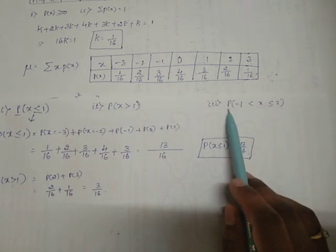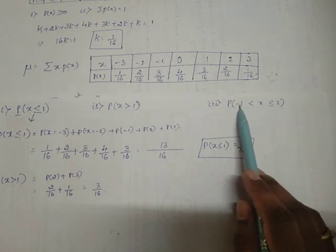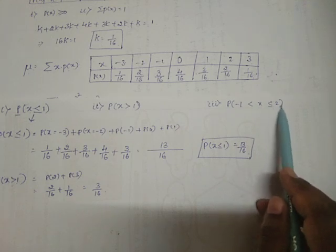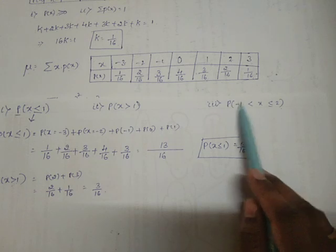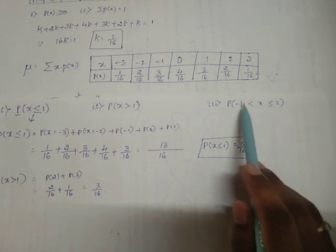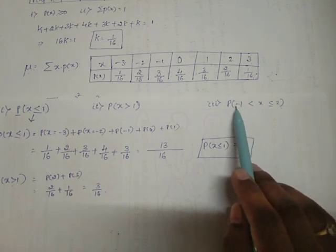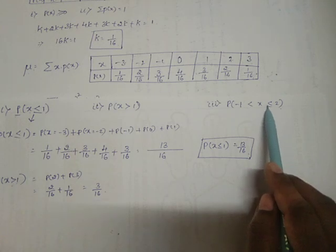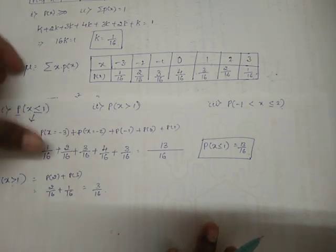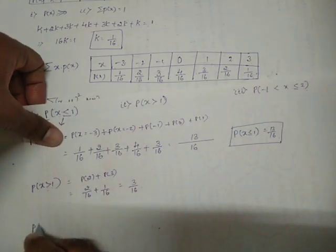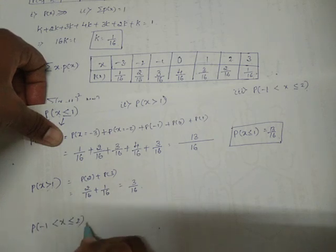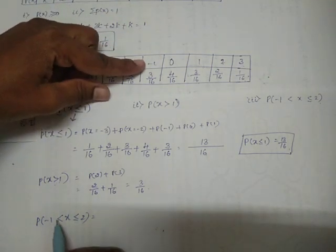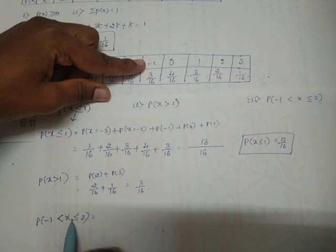The third part asks for the probability of x lying between −1 and 2. They have not included −1 — there is no 'equals' sign — so we exclude −1 and start after it. They have included 2, so we go up to and including 2. P(−1 < X ≤ 2) means x is greater than −1, so we do not take the value at −1.